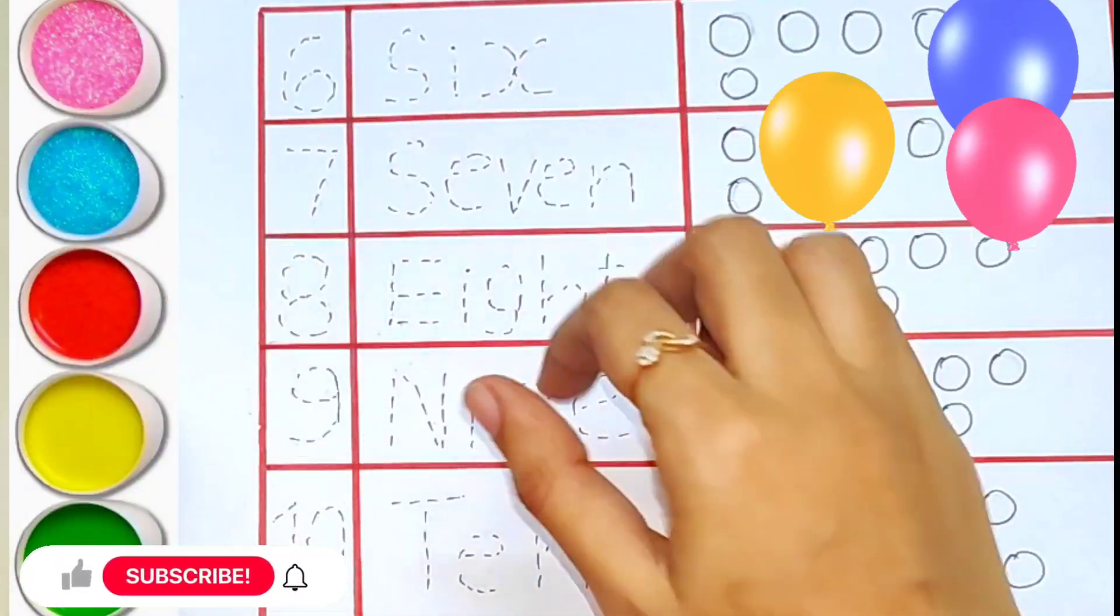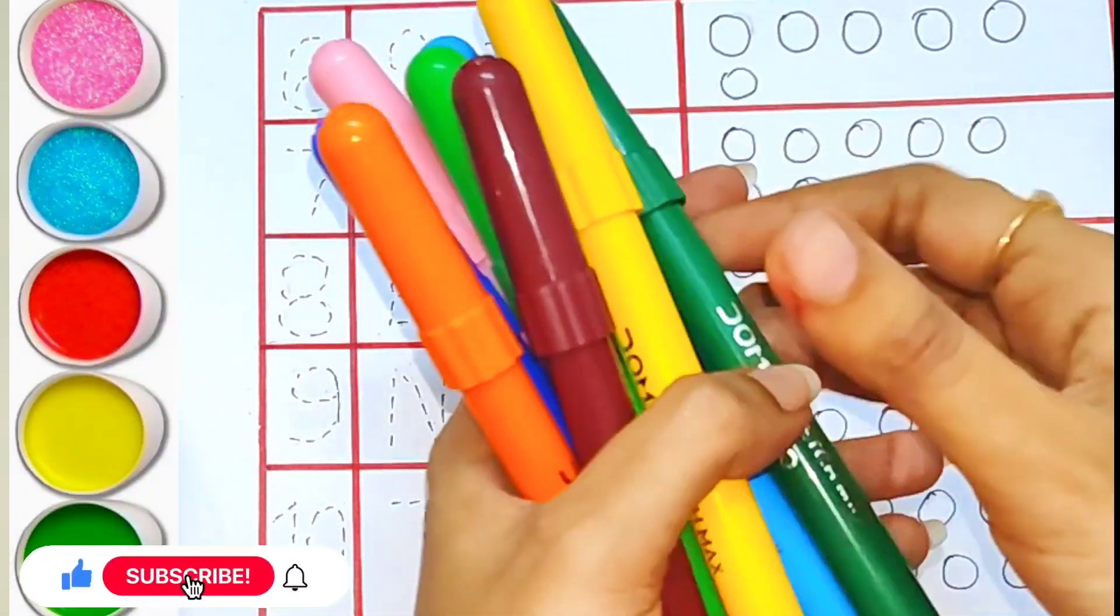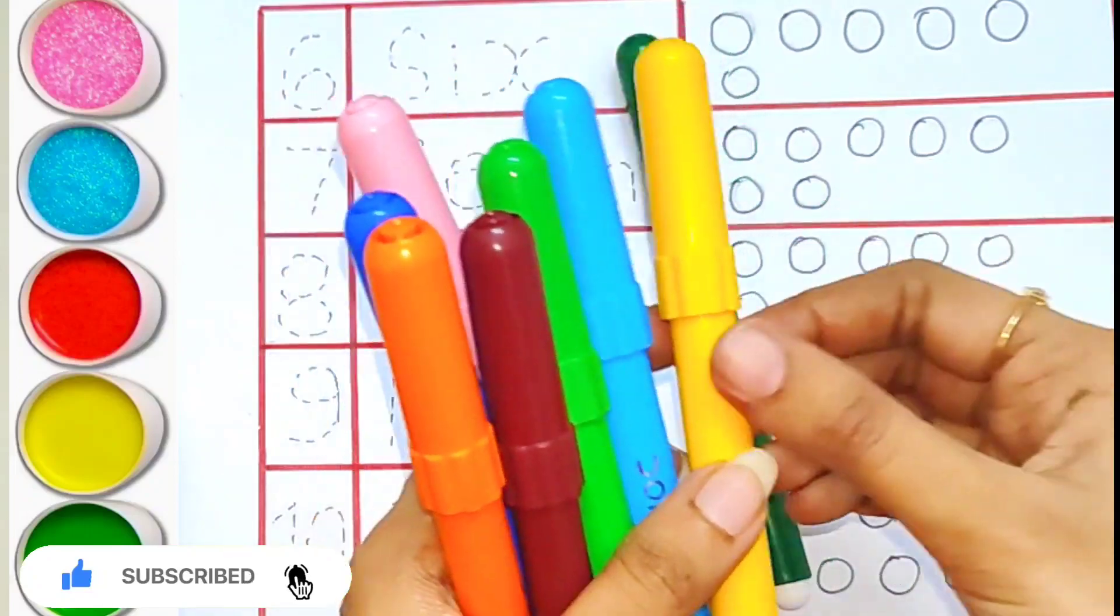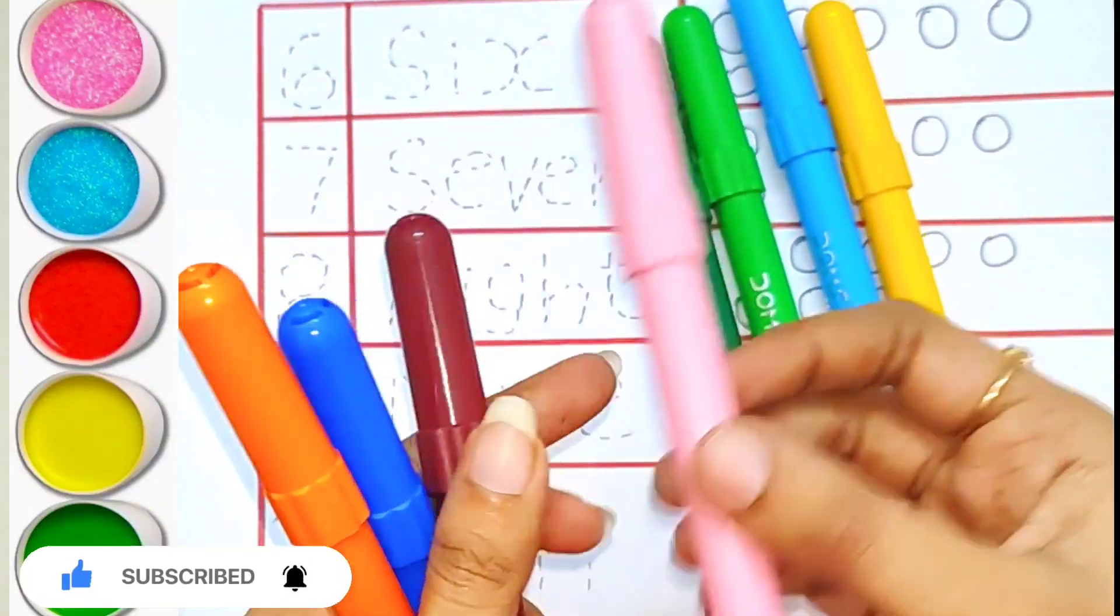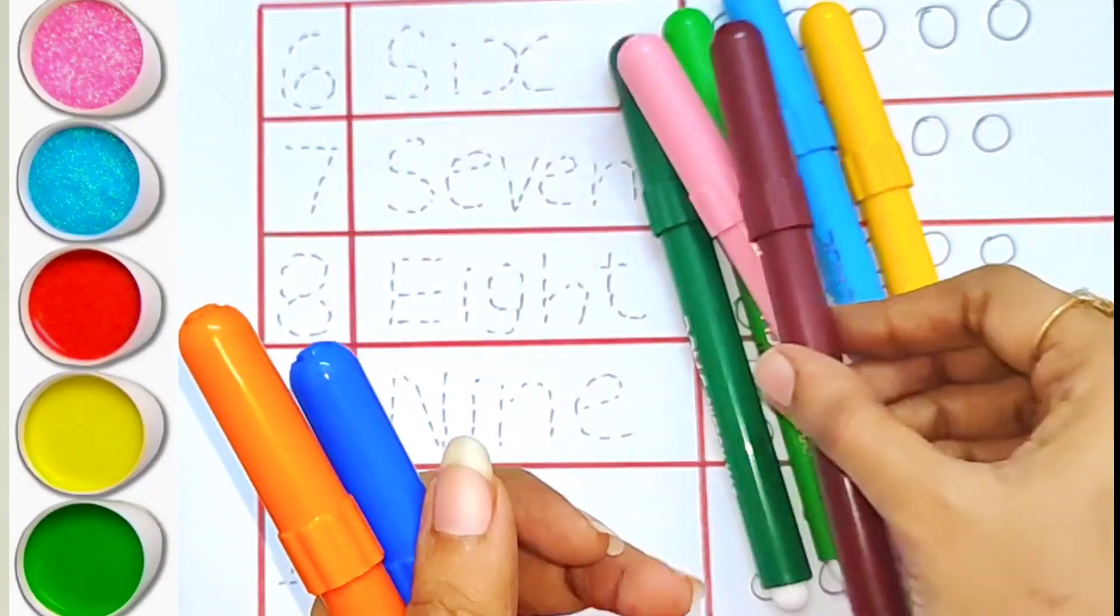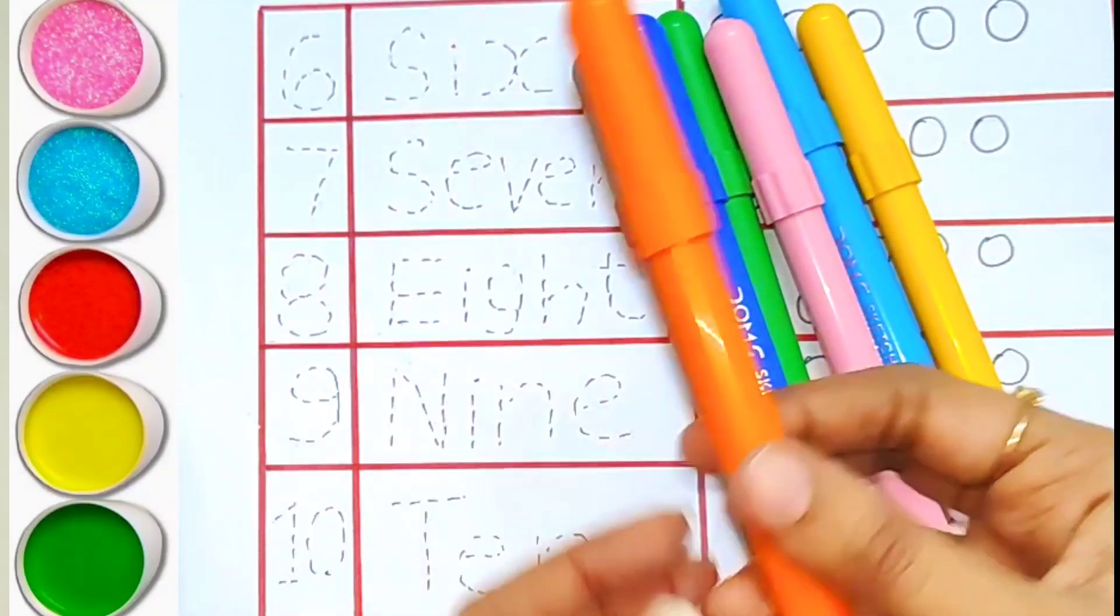Hello children, let's learn some colors: dark green color, yellow color, light blue color, light green color, pink color, brown color, dark blue color, and orange color.